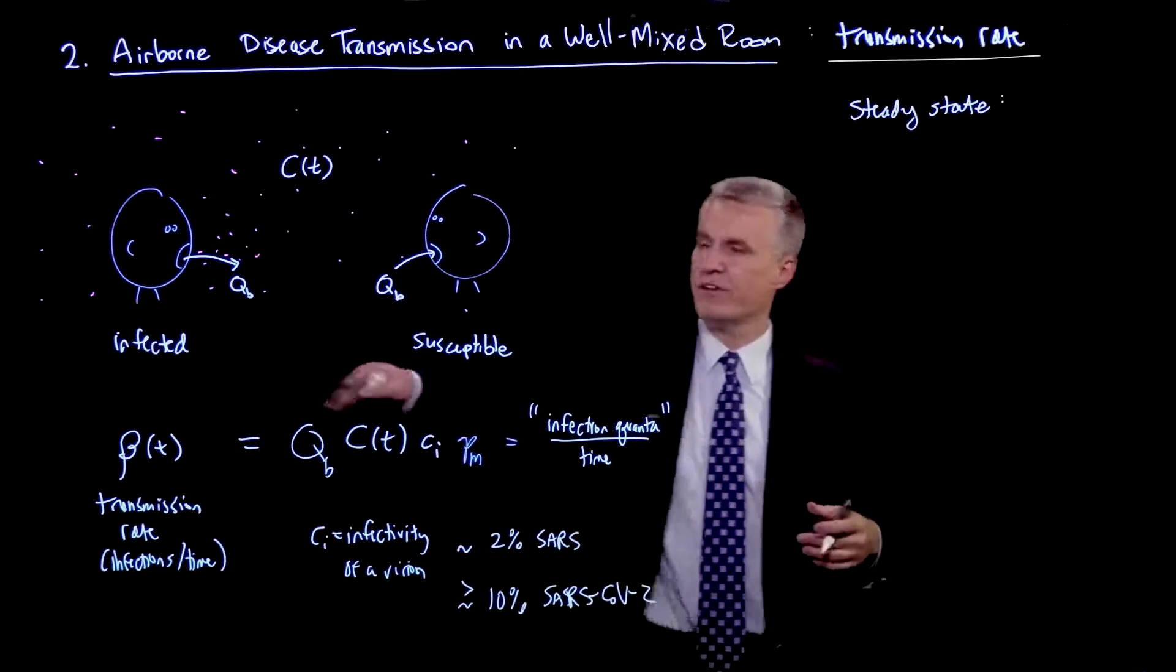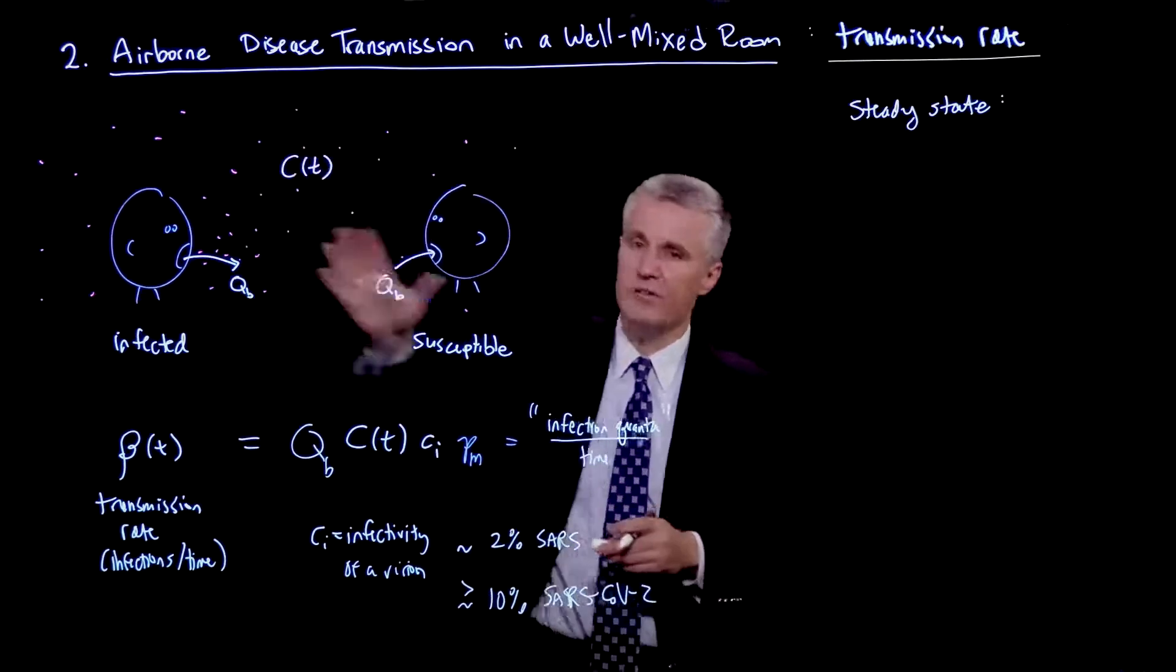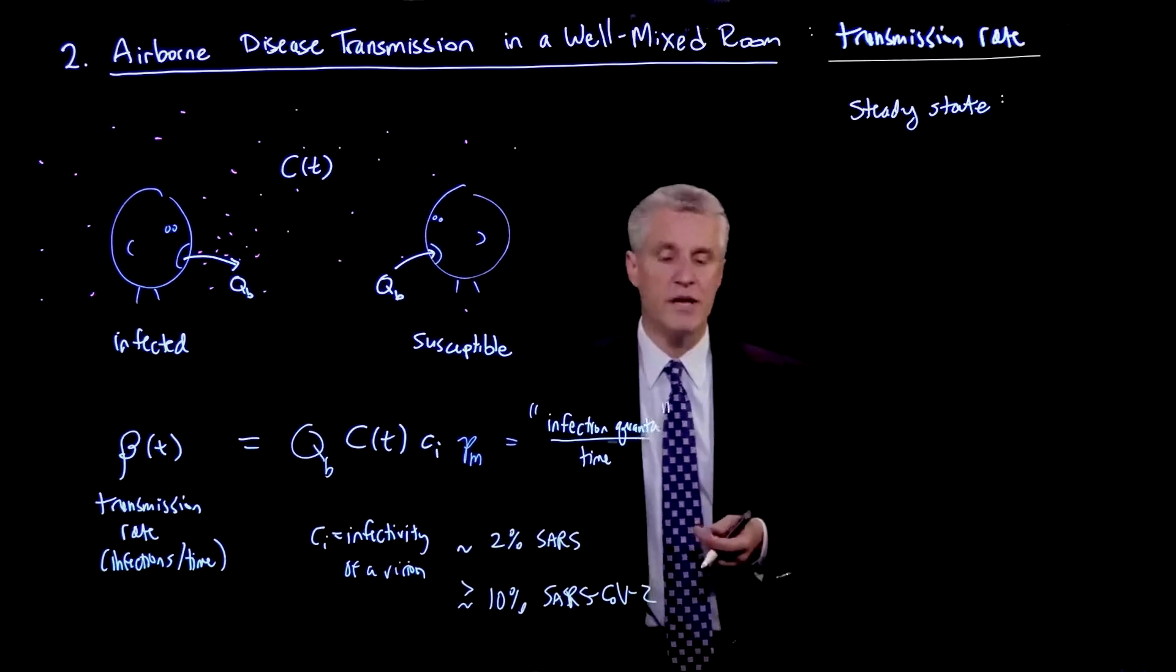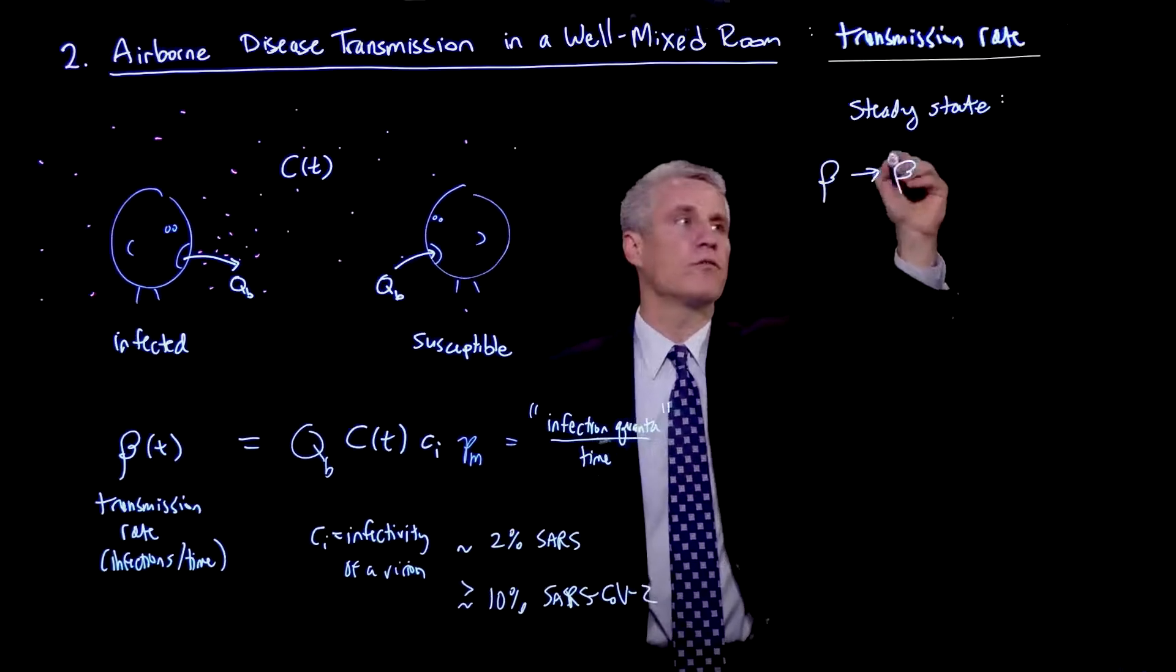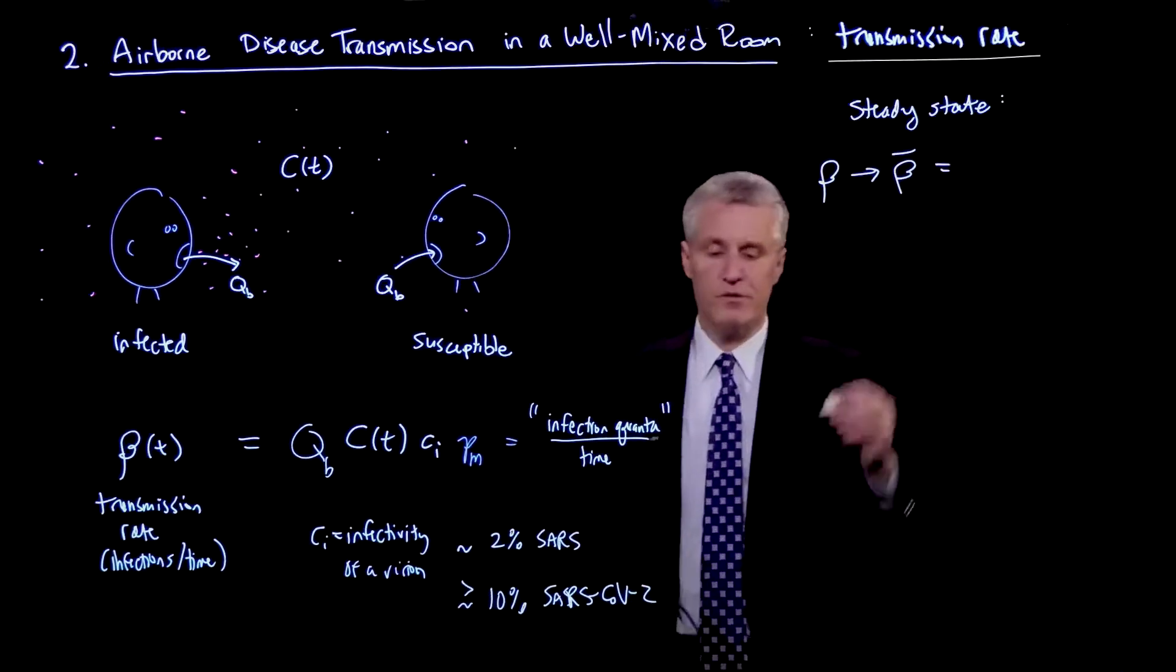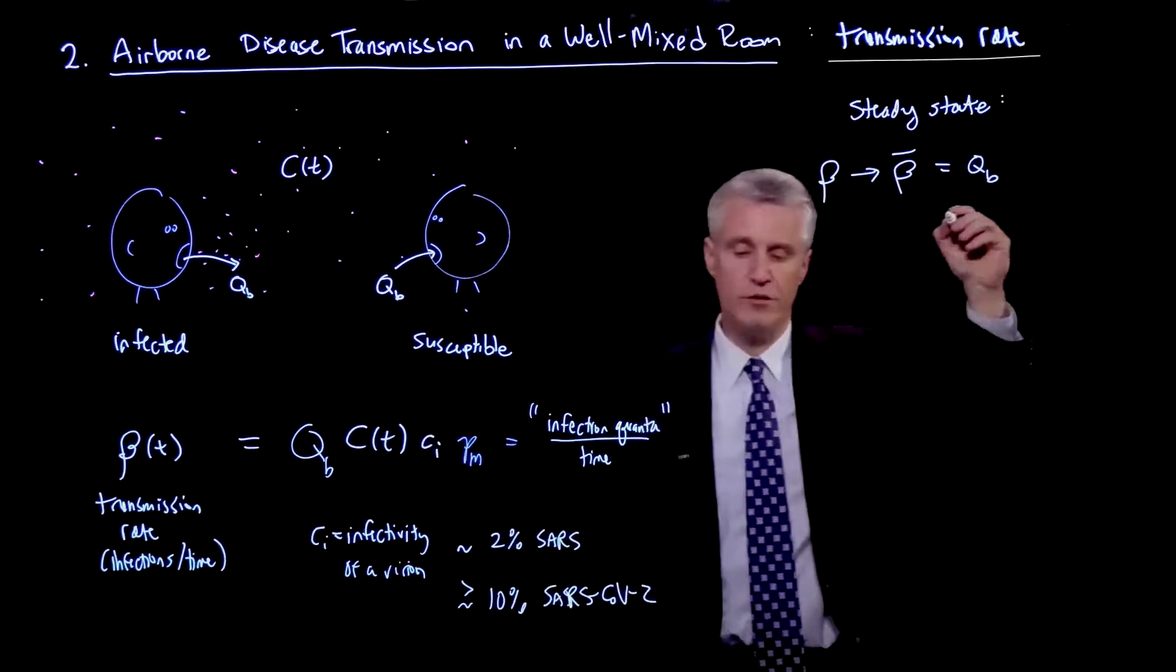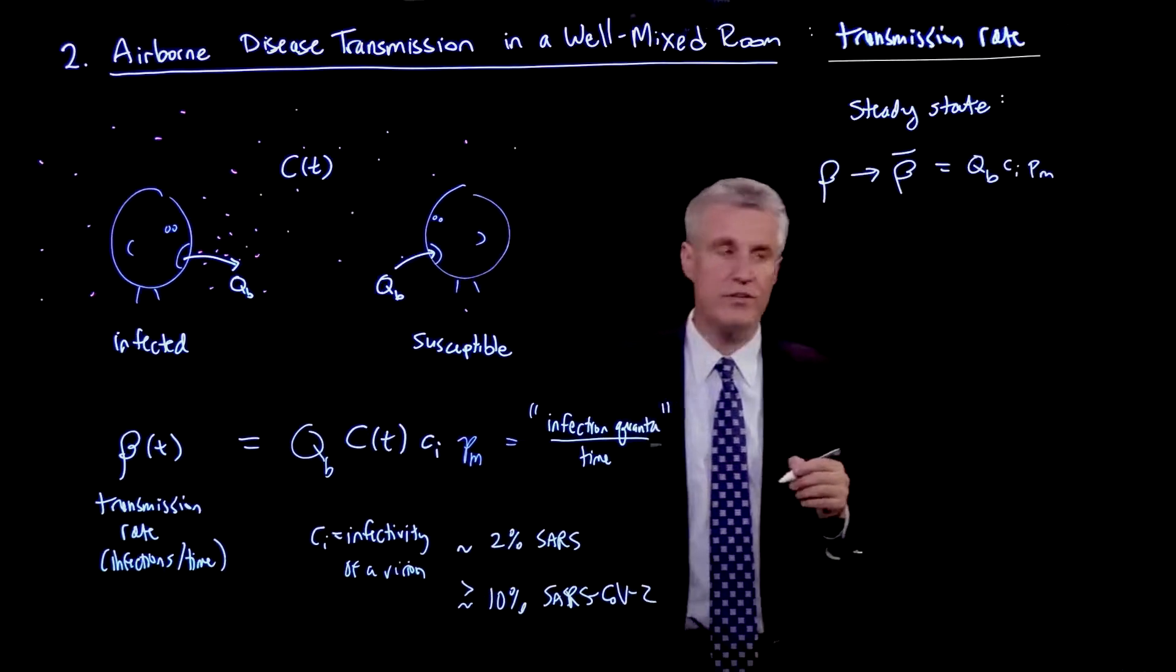So the transient would be when the infected person first enters the room, the concentration is changing in time in the air. But eventually, there's a steady state where there's a balance of the production and the flow rate through the room of refreshing the air with outdoor air. And in steady state, we have the transmission rate is going to go to a constant value, which I'll call beta bar. And that is given by the steady state concentration. So here, I'll rewrite this expression here.